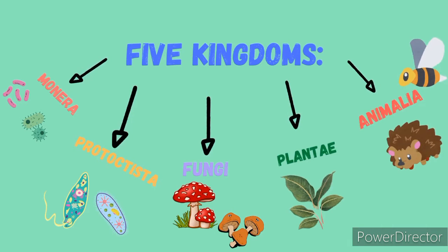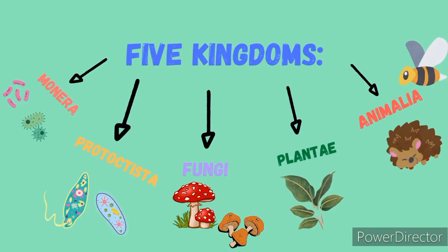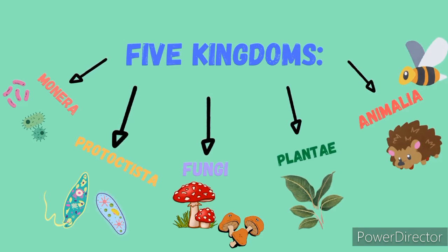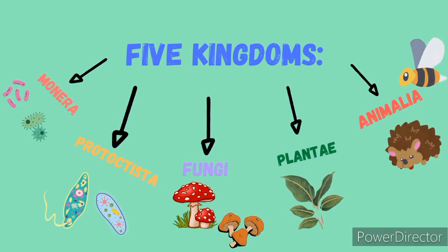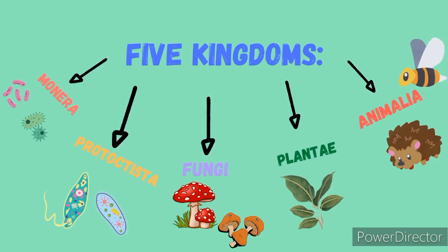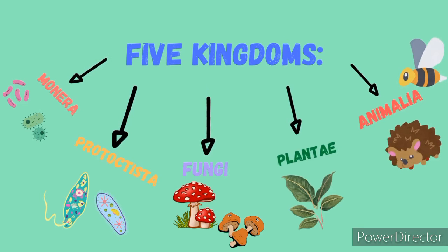Let's start with monera — in this kingdom you only have bacteria. In the next kingdom, protocytista, this is where you have algae and protozoa. In fungi, this is where you have bread mold, mushrooms, and yeast cells. In plantae, of course, you're going to have different types of plants. And then animalia — this is where you have the animals.